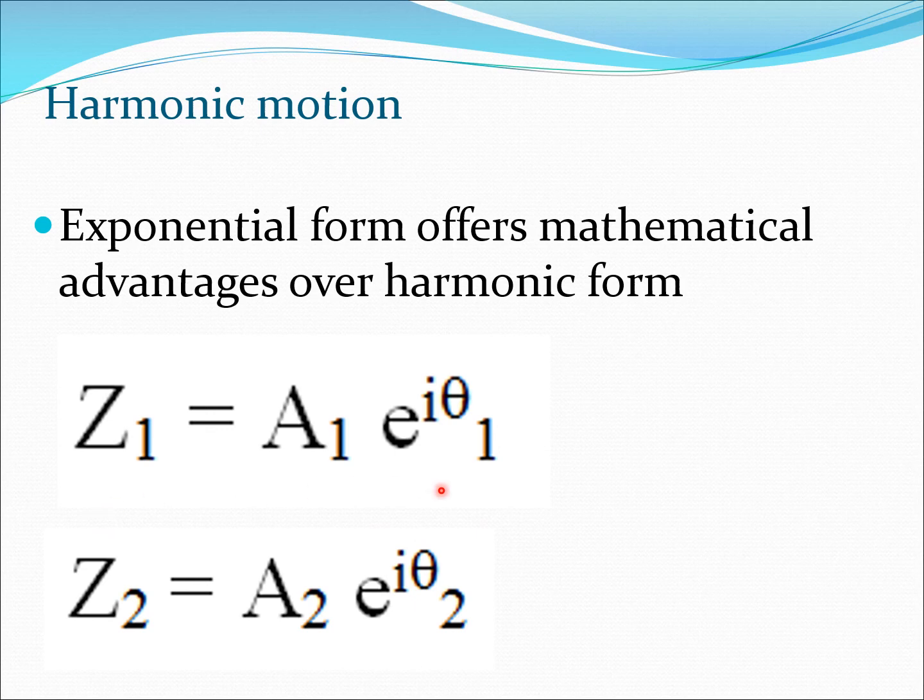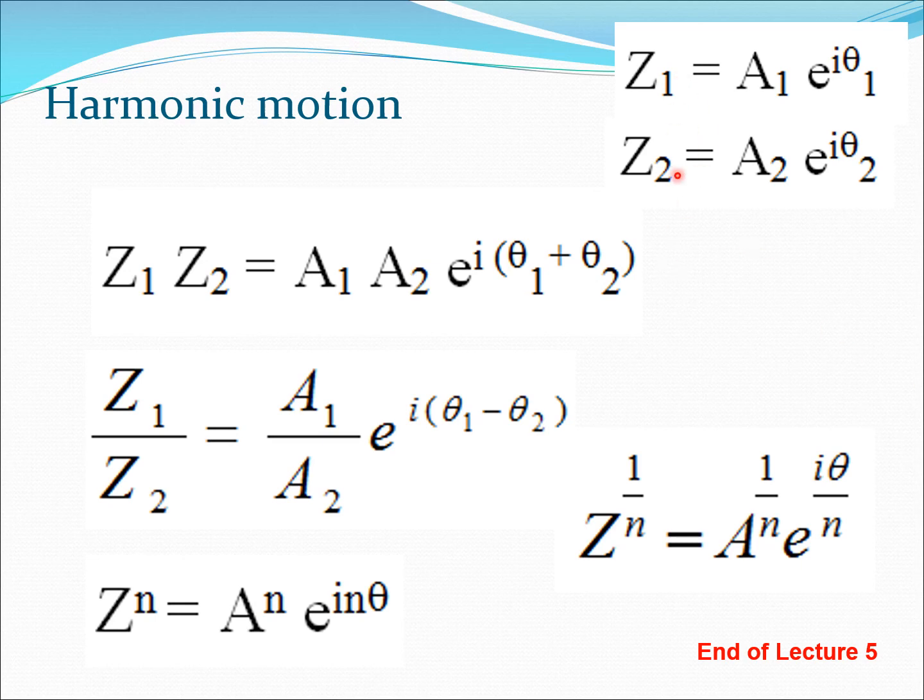So if you have two sinusoids here, you have z1 is this, you have z2 is this, then it is much easier to perform multiplication, division, etc. using these particular notations. So we could take these two, we could multiply these two and it would simply mean that A1 A2 would be multiplied and it would become e^(i(θ1 + θ2)).